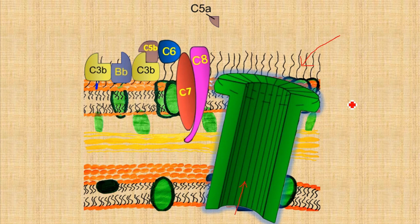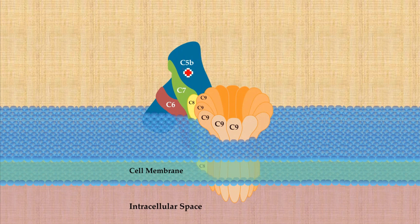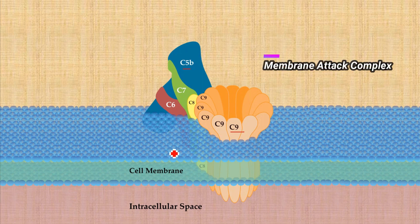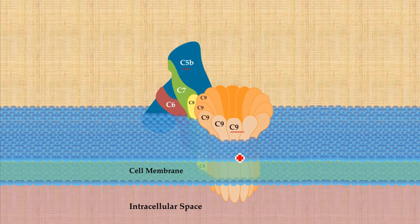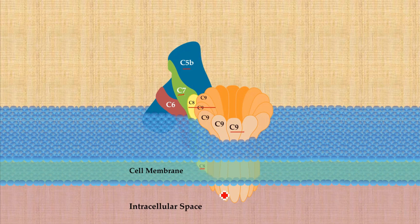This complex — starting from C5b and ending at C9 — is known as MAC, the Membrane Attack Complex. As the name suggests, this pore is created within the cell membrane, allowing the body to attack and kill the pathogen. C7 and C8 are embedded deep into the membrane due to their hydrophobic regions, forming the structural anchor of the MAC.